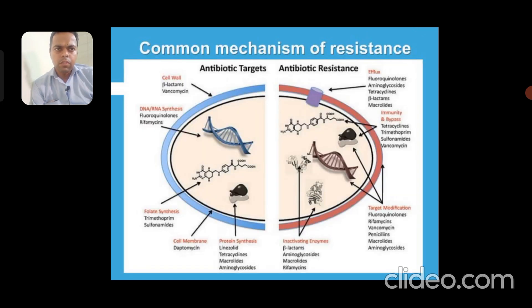Common mechanisms of antibiotic resistance include antibiotic targets such as the cell wall, DNA/RNA synthesis, folate synthesis, cell membrane, and protein synthesis. Other mechanisms include efflux pumps, enzyme inactivation such as beta-lactamase, bypass pathways such as trimethoprim, target modification, and inactivating enzymes.